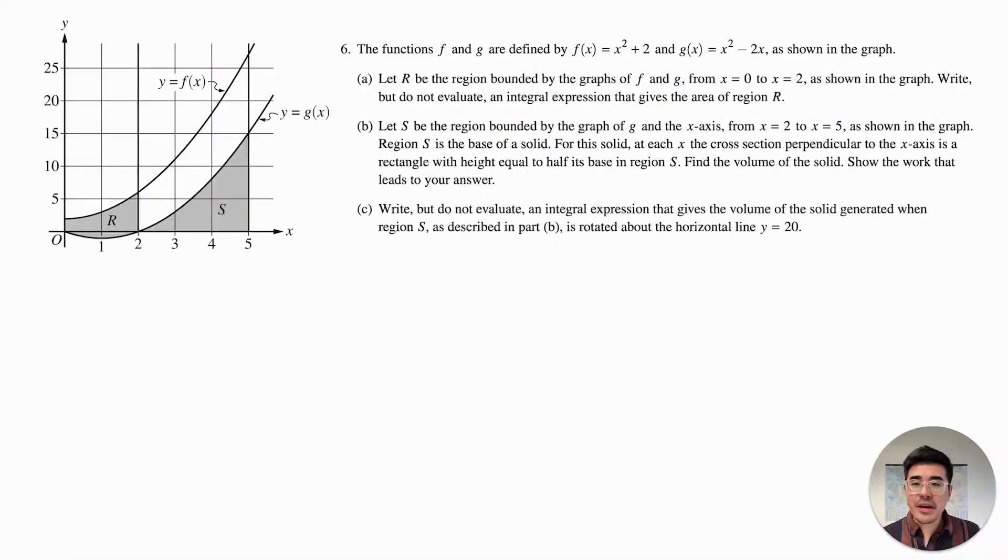Question six is our area slash volumes question. They give us the two graphs of f and g as shown in the graph. So here's f, here's g. Part A says, let R be the region bounded by the graphs f and g from 0 to 2 as shown in the graph. Write, but do not evaluate an integral expression. So that's really nice here because these are pretty simple. So to look at R, I always look at which direction I'm going to draw my slices. So here my slices are vertical. That's because there's a clear pathway between the top and the bottom. I wouldn't want to do a horizontal slice because I'm hitting the same graph here. There's not a clear distinction between the two graphs.